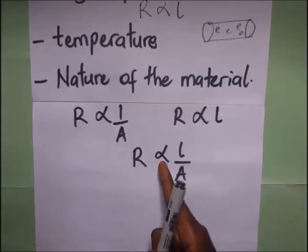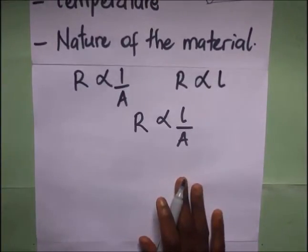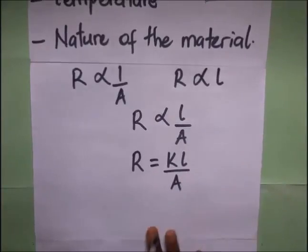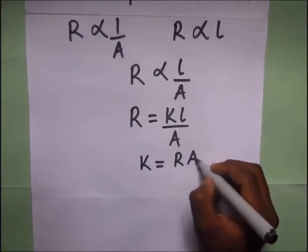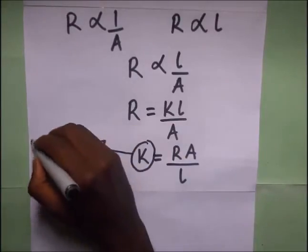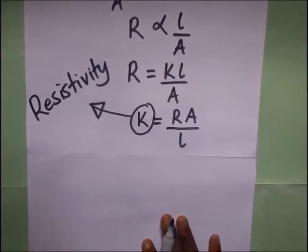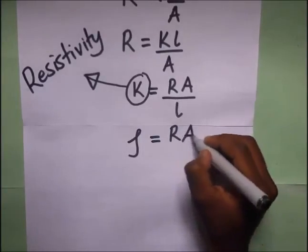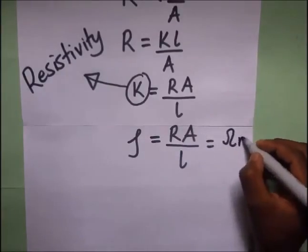If we introduce a proportionality constant K, and make K the subject of the formula, it will be: K equals resistance times cross-sectional area divided by length, R·A/L. This value of K is what we call the resistivity of that conductor. The resistivity is denoted by ρ, and is equal to resistance times cross-sectional area over length. The SI units for resistivity are ohm meters.